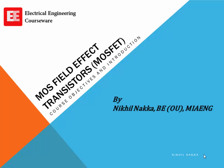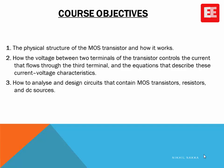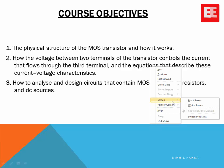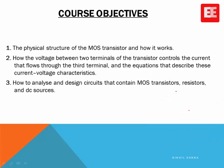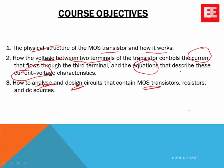The main objectives of this course are that by the end you must be very well conversant with the physical structure of the MOS transistor and how it works — how the voltage between two terminals controls the current through the third terminal, the equations describing the current-voltage characteristics, and how to analyze and design circuits containing MOS transistors, resistors, and DC sources.